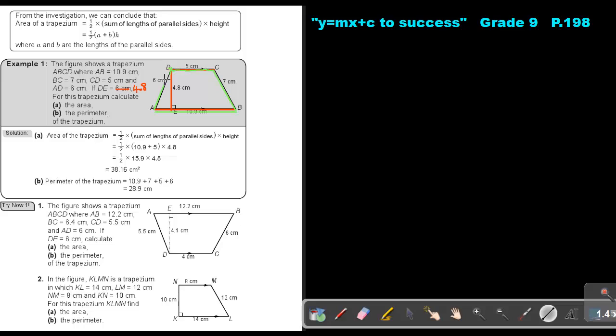the distance around the figure, until I connect at the starting point. So that will just be 10.9 plus 7 plus 5 plus 6. And that will be the perimeter of the figure.